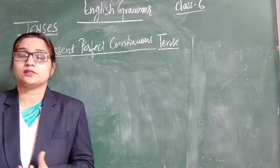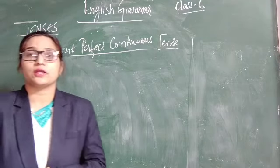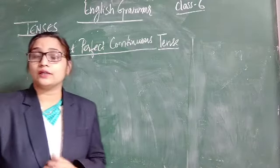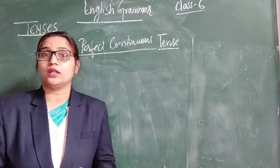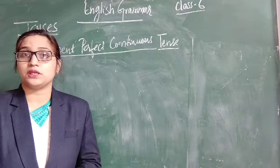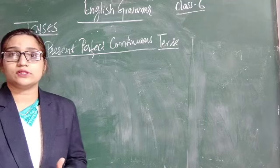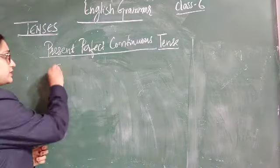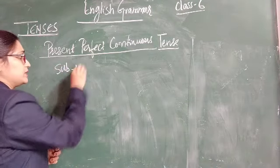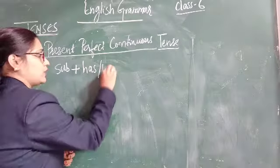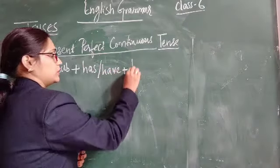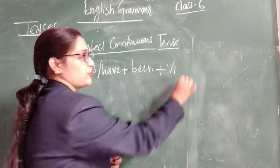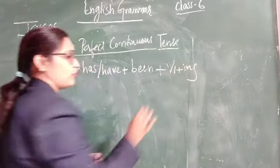The first question is: when to use this present perfect continuous tense? When we talk about an action which started in the past but is continuing at the time of speaking, then we use present perfect continuous tense. Its structure is: subject plus has or have been plus main verb, first form with -ing form.